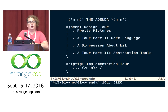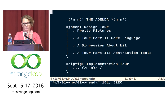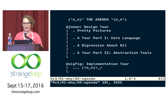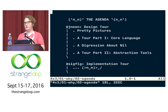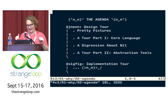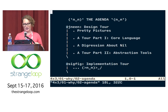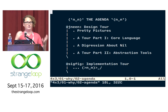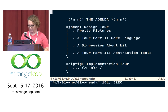So today I'm going to give you a tour of Tulip. I will give you a tour of the frontend and the design, and Sig will give you a tour of the backend and the runtime. I'm going to show you some pretty pictures, tell you about the core language and some of our ergonomic features, talk about nil, and tell you about what kinds of abstraction tools we ship with. Then I'll hand it to Sig to talk about the runtime.